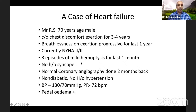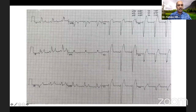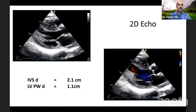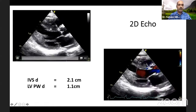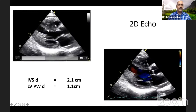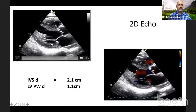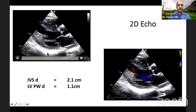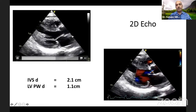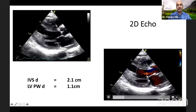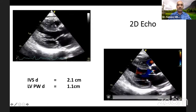LVOT obstruction can also lead to LV systolic hypertension, and hypertension itself can occur alongside this. These are the multiple mechanisms through which hypertrophic cardiomyopathy leads to heart failure — ranging from diastolic dysfunction to outflow obstruction to end-stage burnt-out phase — all requiring careful assessment and management.